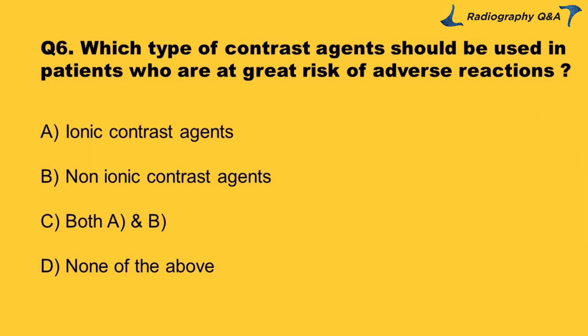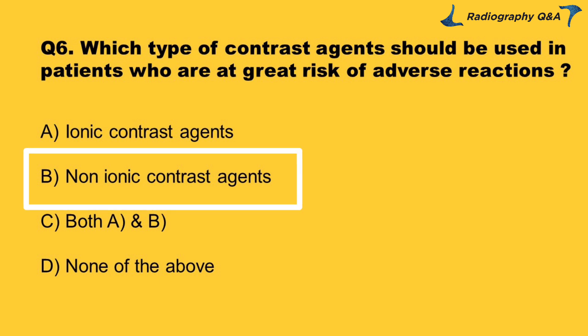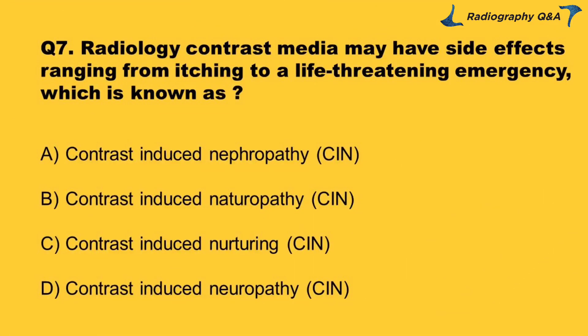Question 6: Which type of contrast agents should be used in patients who are at great risk of adverse reactions? Option A: ionic contrast agents. Option B: non-ionic contrast agents. Option C: both A and B. Option D: none of the above. Right answer is Option B.